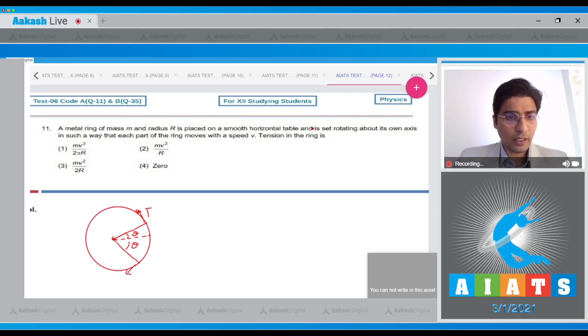The tension will be t and t here. Now, the horizontal component of the tension, that is towards the center, will be 2t sin theta net, and this will be equal to the centripetal force required for the rotation or the revolution of the small part of the ring that is having a mass dm.